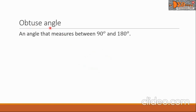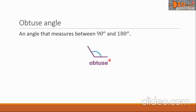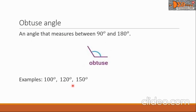The next angle is the obtuse angle. It is an angle that measures between 90 degrees and 180 degrees. Here is a figure for an obtuse angle. Some examples of an obtuse angle are 100 degrees, 120 degrees, and 150 degrees.